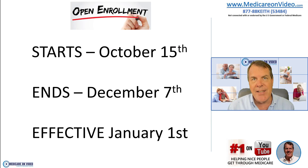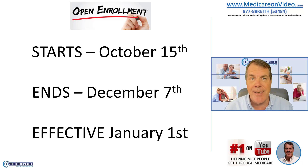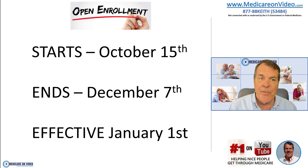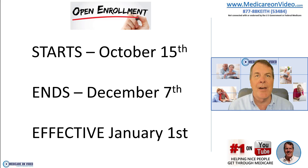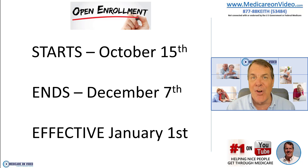First, let's talk about the dates, which are super important — they are hard dates. If you miss the deadline, that's it; they won't give you any leeway. Open enrollment starts October 15th, runs through December 7th, and whatever choice you make becomes effective January 1st. Do it early — if you're trying to do something on December 6th, it probably won't work out. End of October is really the best time to get it done.